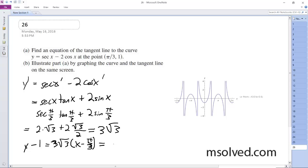And we get y is equal to 3 root 3, our final answer is going to be 3 root 3 x plus 1 minus π root 3. That's it.